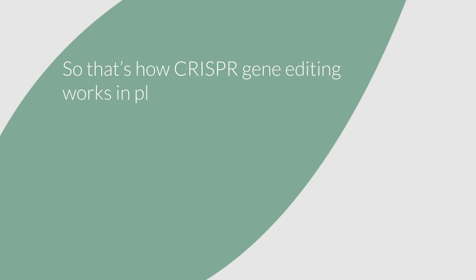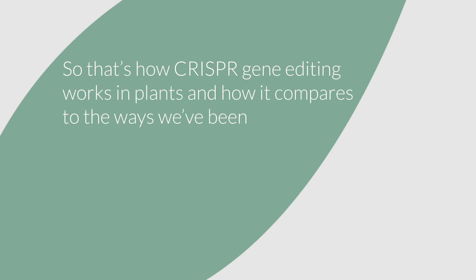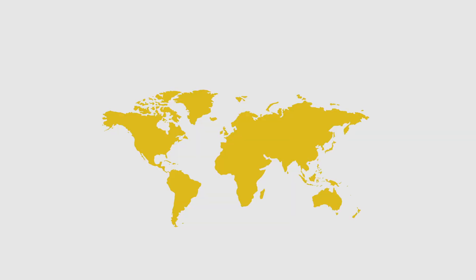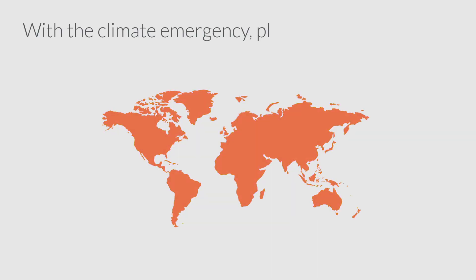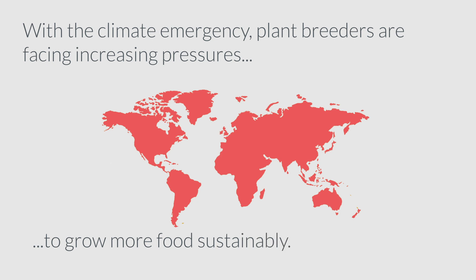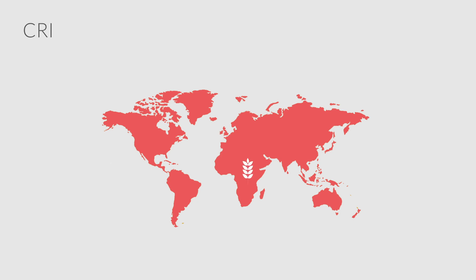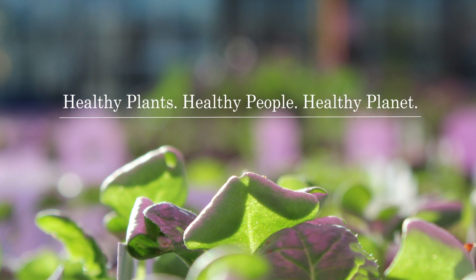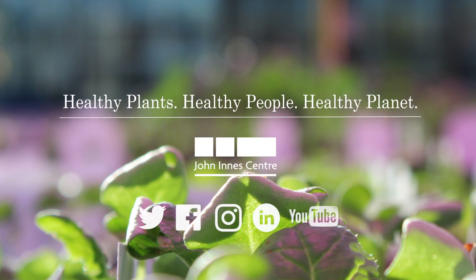So that's how CRISPR gene editing works, and how it compares to the ways we've been breeding plants before. With a climate emergency, plant breeders are facing increasing pressures to grow more food sustainably. CRISPR gene editing is one way, among others, that we can do this.